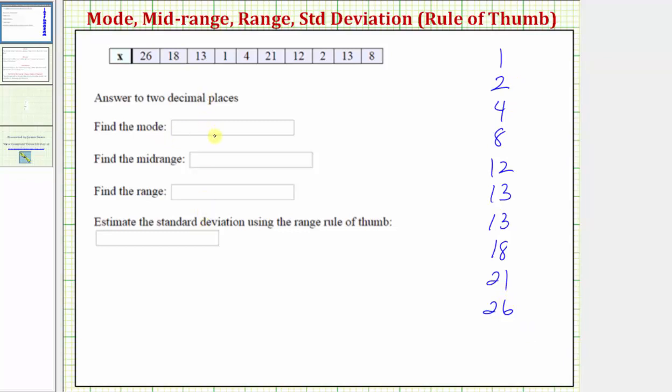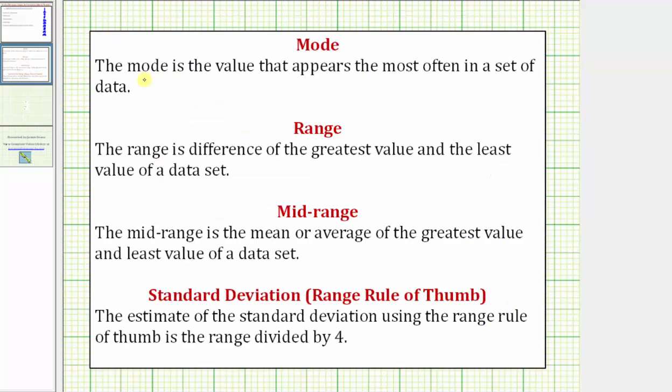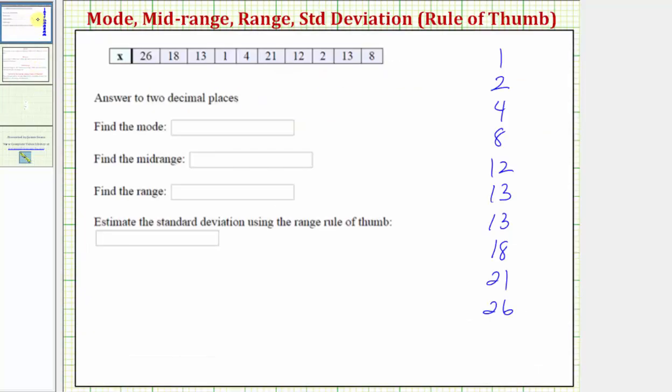So let's begin by determining the mode. For review, the mode is a value that appears the most often in a set of data. And there can be more than one mode if more than one value appears the most.